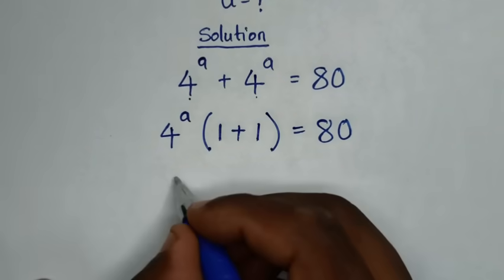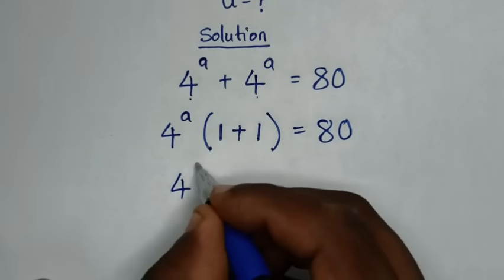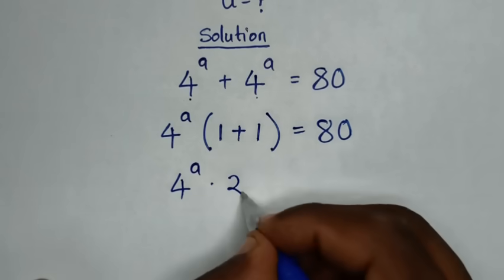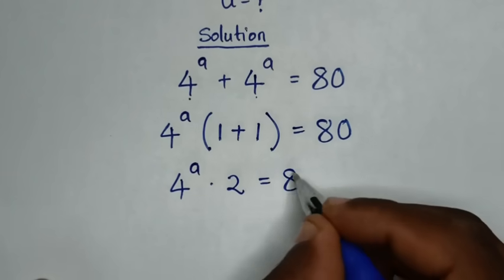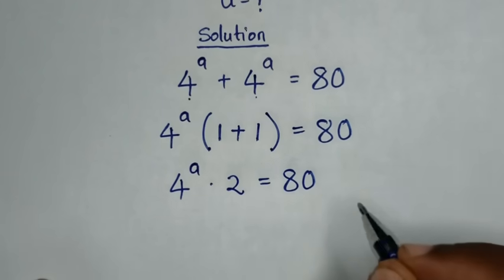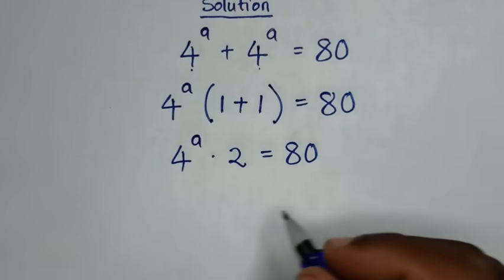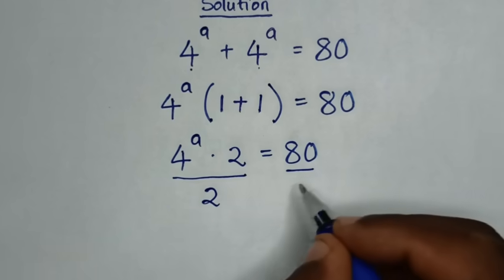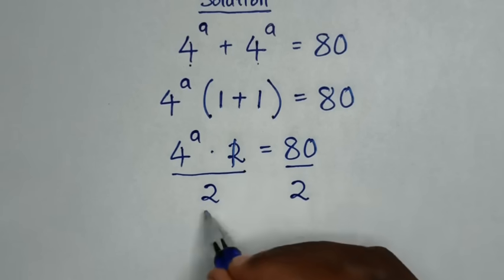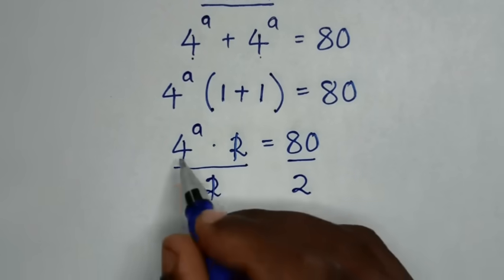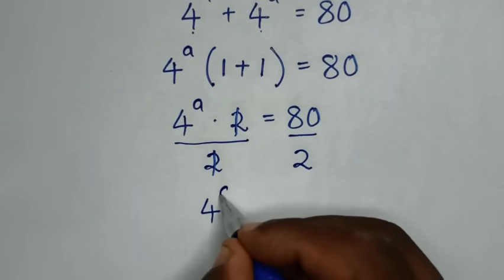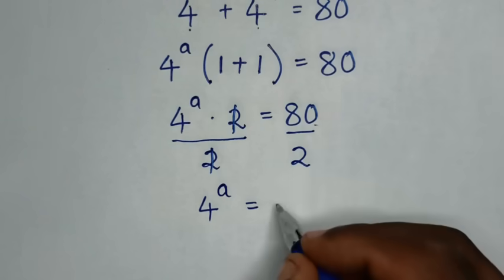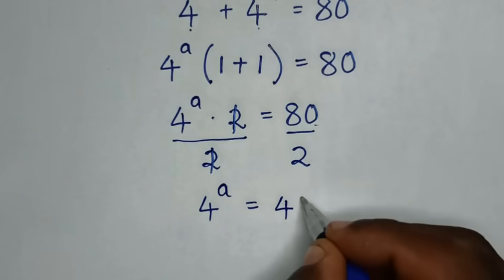Then in the next step, it will be 4 power a times 1 plus 1, which is 2, is equal to 80. Then we divide by 2 on both sides. This and this will cancel, then it will be 4 power a is equal to 80 divided by 2, which is 40.